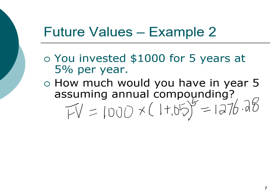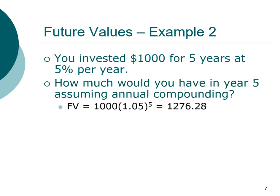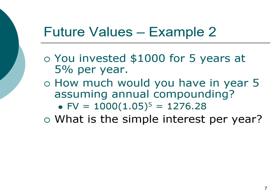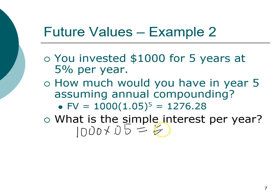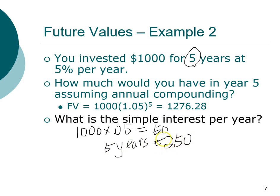Now, what is the simple interest per year on this problem? The simple interest is five percent on one thousand dollars, which is fifty dollars per year. You invested for five years, so multiplying fifty dollars by five years gives us a total of two hundred and fifty dollars in simple interest over five years.